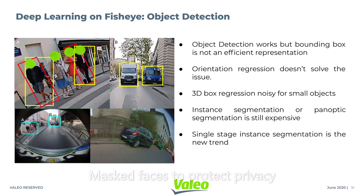In the case of fisheye object detection, bounding box representation is not an efficient representation, especially for automotive safety applications where the exact position of the object is quite important. Vehicles near the center region of the image have lower parts of bounding boxes representing the object's intersection with the road quite well. But standard bounding boxes in yellow are not good enough to represent the object-road intersection for objects at the image periphery.